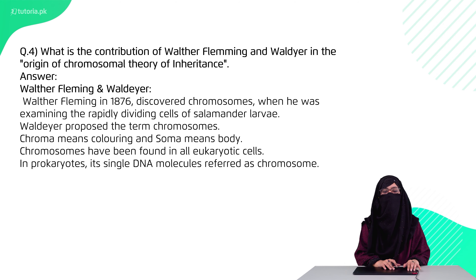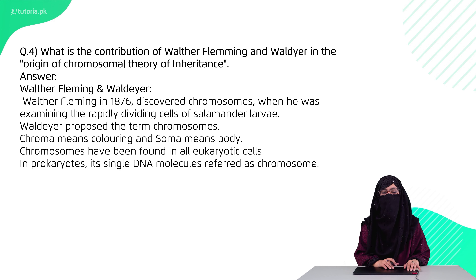Question 4 is: what is the contribution of Fleming and Walther in the origin of the chromosomal theory of inheritance? Fleming and Walther in 1876 discovered chromosomes in the colored body of dividing cells of the salamander, and then they concluded that chromosomes behave like Mendel's factors.